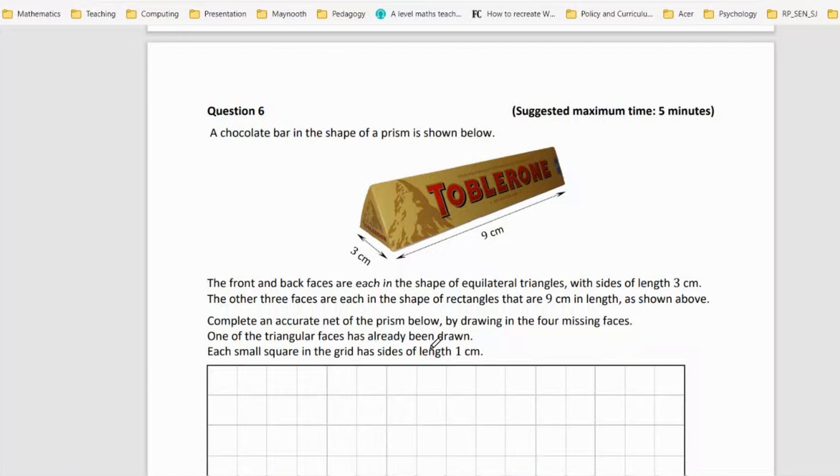Okay, so question six is the next question. Pretty quick one, really. So they give you the Toblerone. The front and back on each are equilateral, right? So that's that guy there. Okay, there's another one over here.